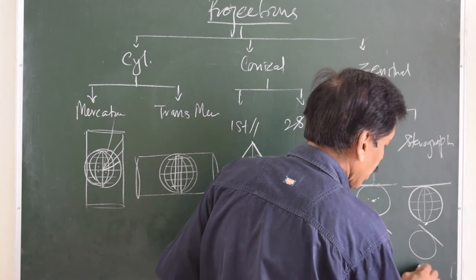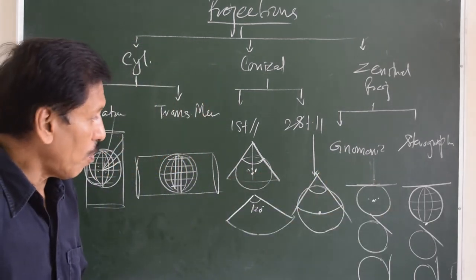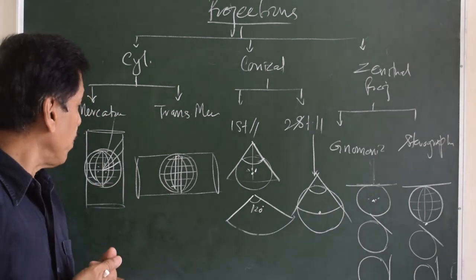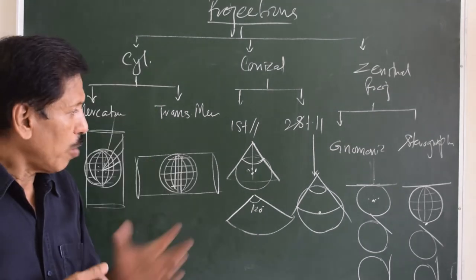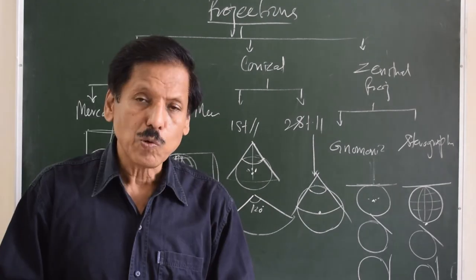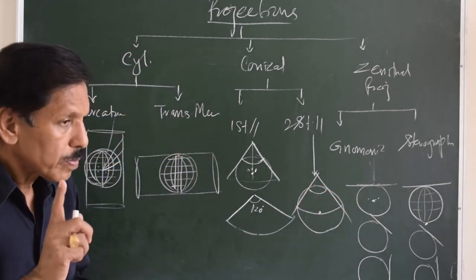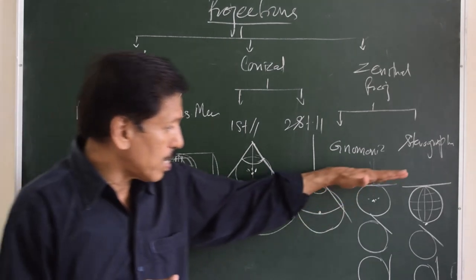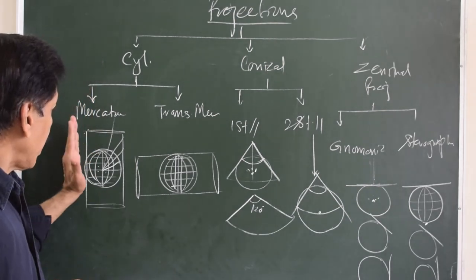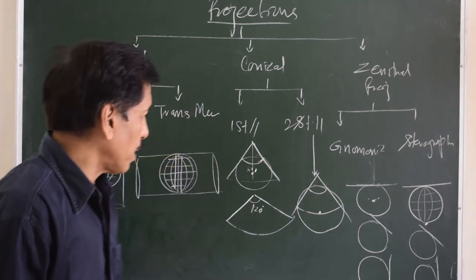Stereographic projection is a conformal projection. Two-standard-parallel conical projection is not originally conformal but can be made conformal. Mercator projection is a conformal projection. We must understand why we need different types of projections for different purposes, and using the light-and-shadow principle helps us understand their utilities.